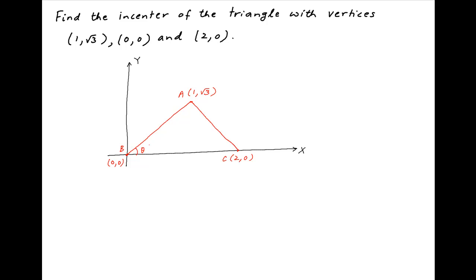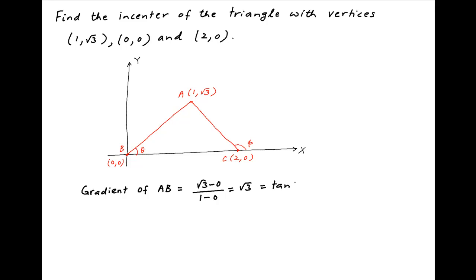Let's denote by θ the angle made by line AB with the positive direction of the x-axis, and by φ the angle made by line AC with the positive direction of the x-axis. The gradient of line AB is equal to (√3 − 0) / (1 − 0) = √3. Since this equals tan θ, therefore θ = π/3.